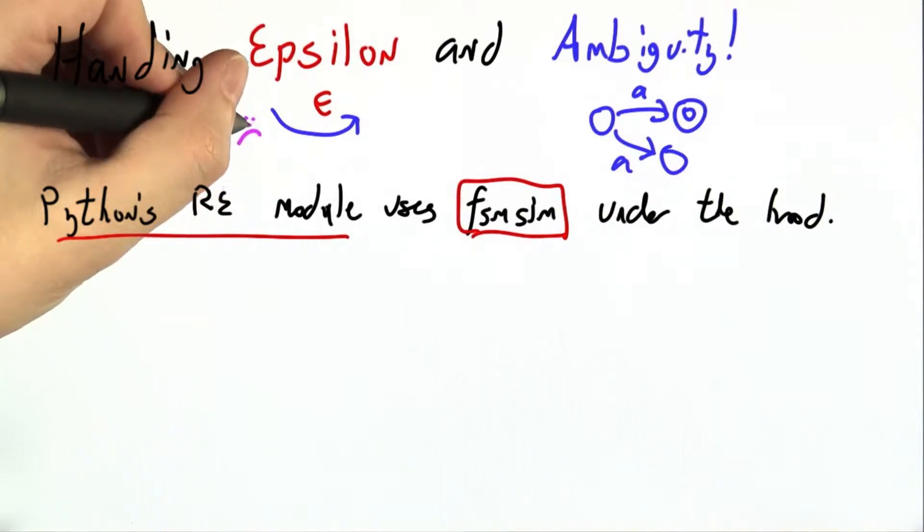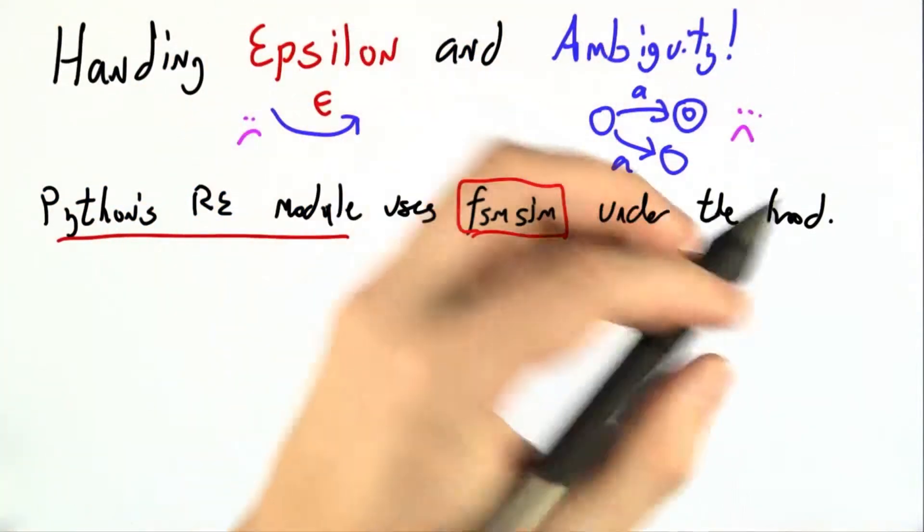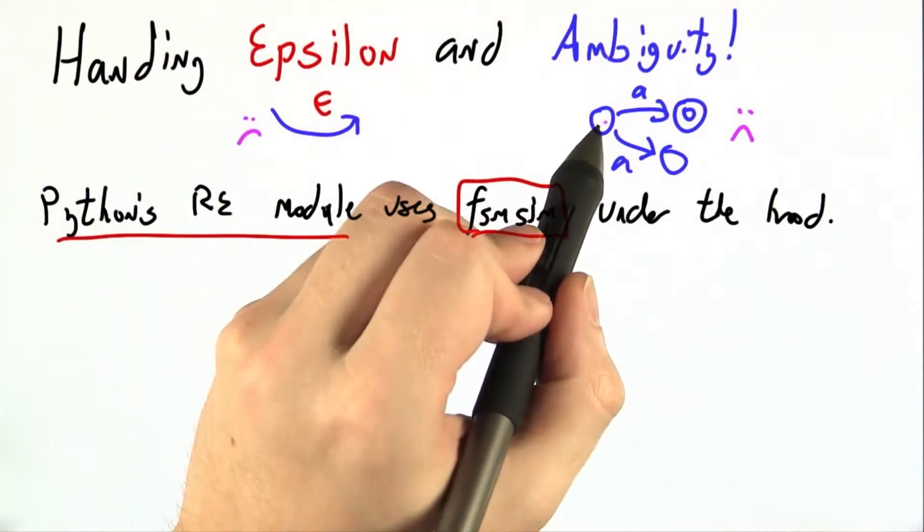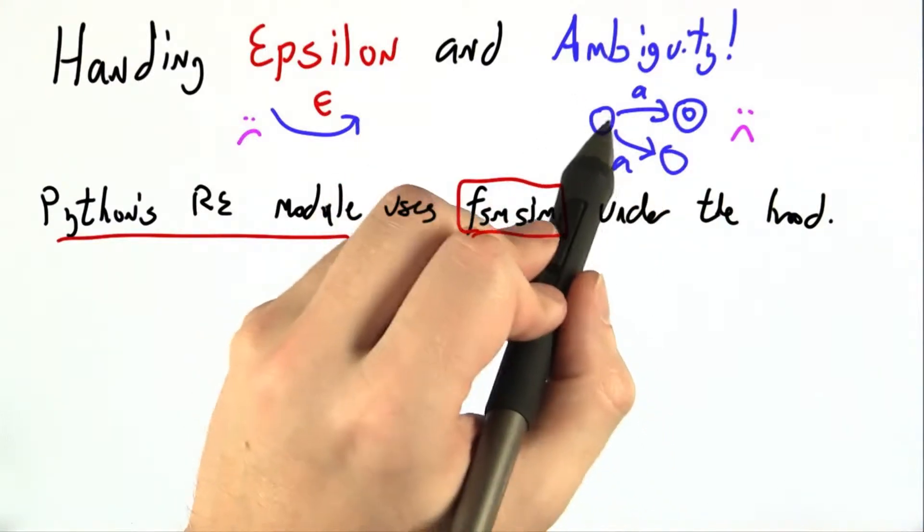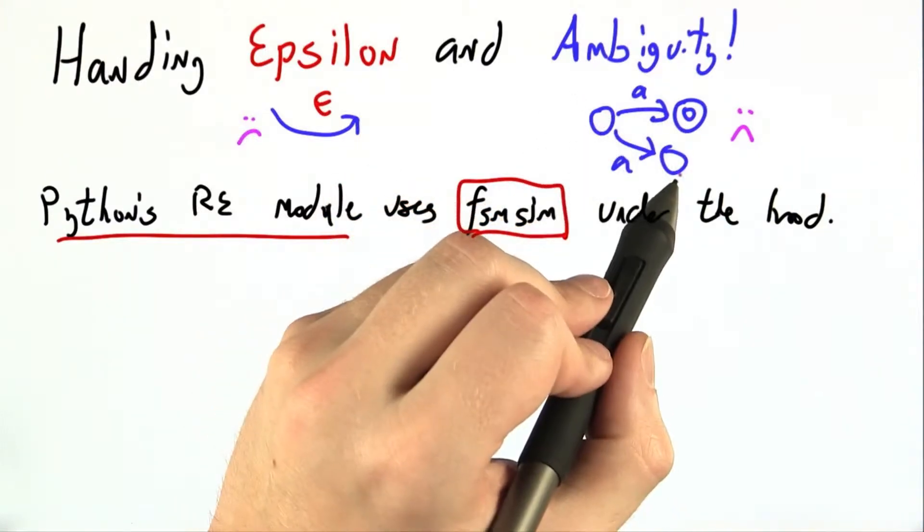However, our simulation did not handle epsilon transitions or ambiguity. And what I mean by ambiguity is, what if there are two outgoing edges labeled A? Let's say one of them leads to an accepting state and one of them doesn't.